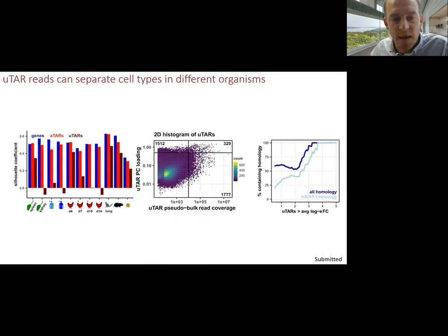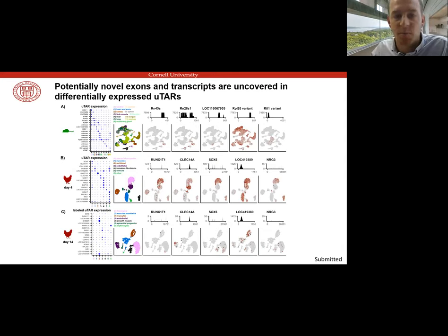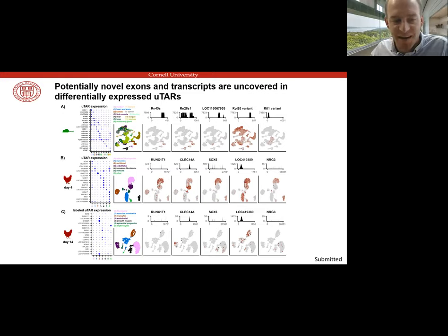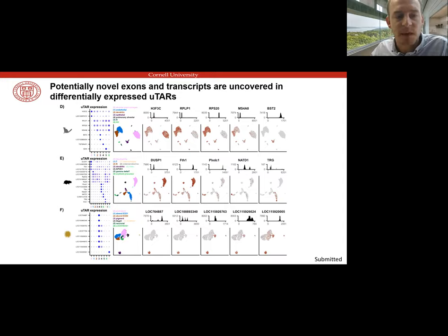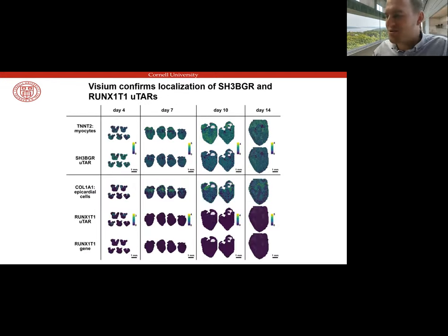We've done this for many species. For chicken, there's more unannotated activity at earlier stages of development than at later stages, which may be expected. For the naked mole rat, sea urchin, and lemur, the gene annotations are very much lacking and lots of information is recovered by this technique. You can also use spatial transcriptomics to map out these unannotated transcripts.